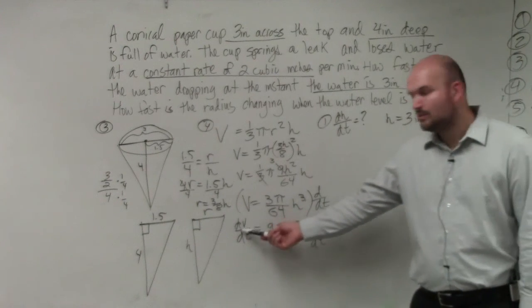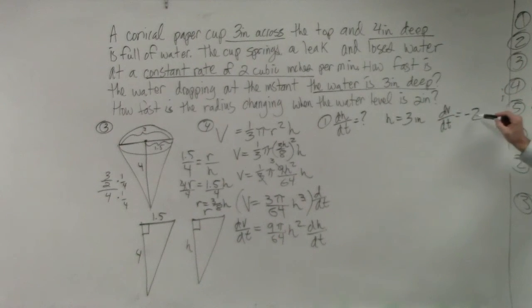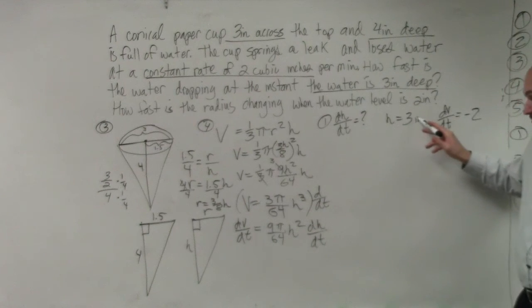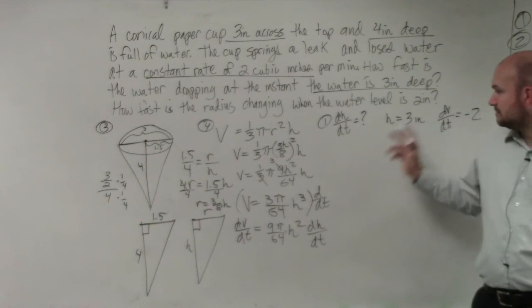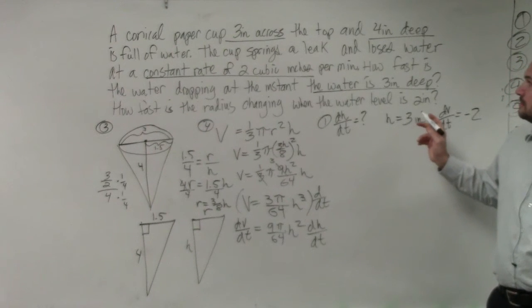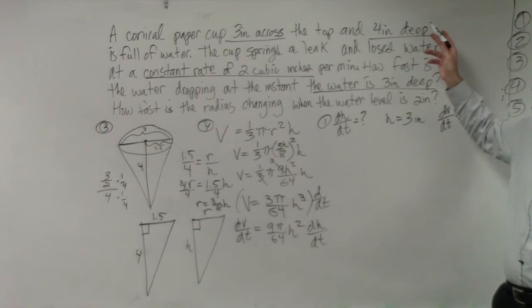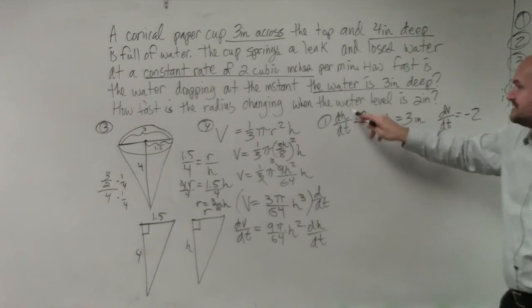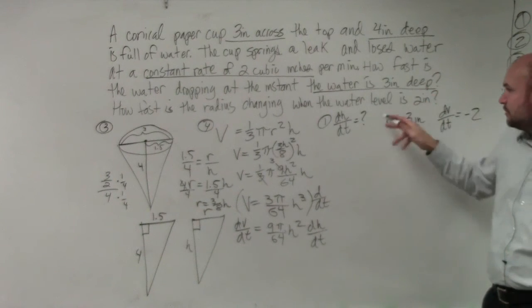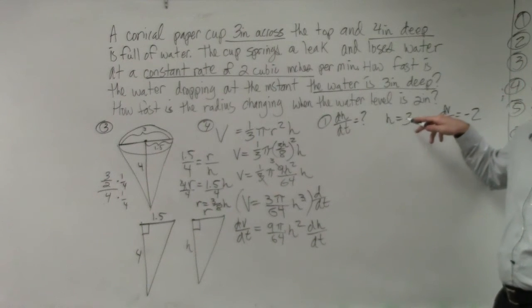And then again, what is dv/dt? Negative 2. What is h? 3. h is 4. No, no, no. Well, yes, it's originally at 4, but what they're asking is, they're asking, what is dh/dt when the water is 3 inches deep? So, that's what we want to know. We want to know what dh/dt is when this is 3. Does that make sense?